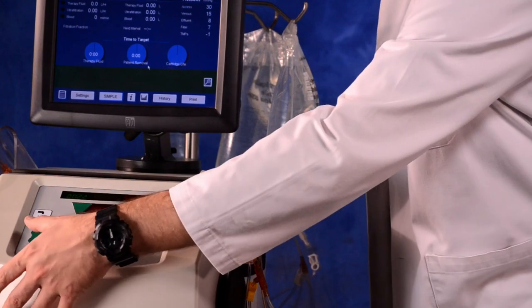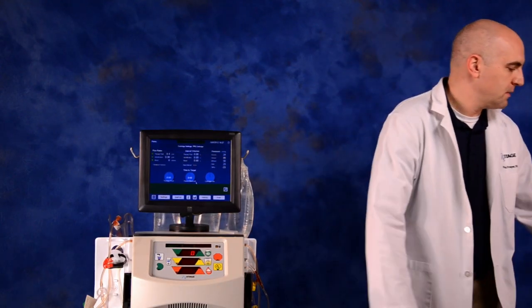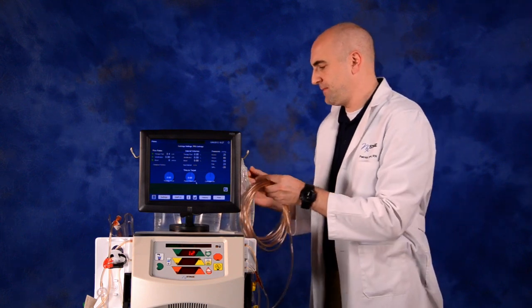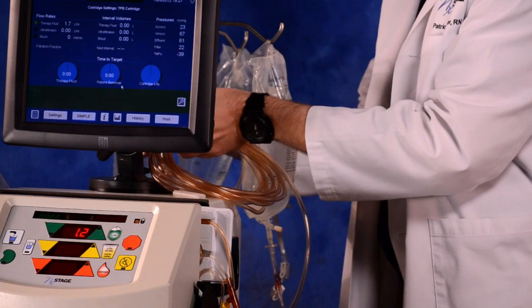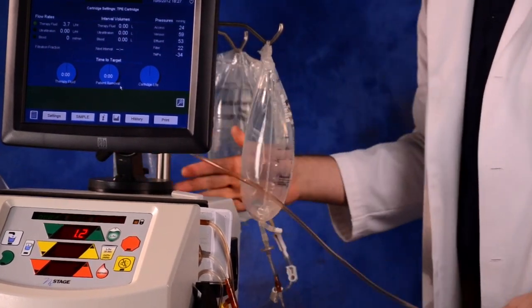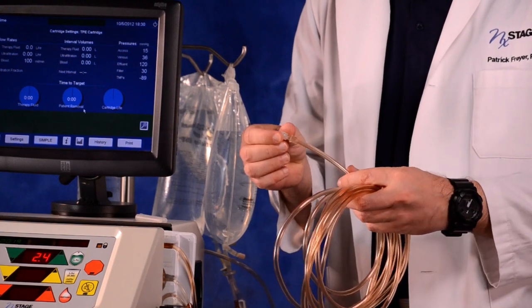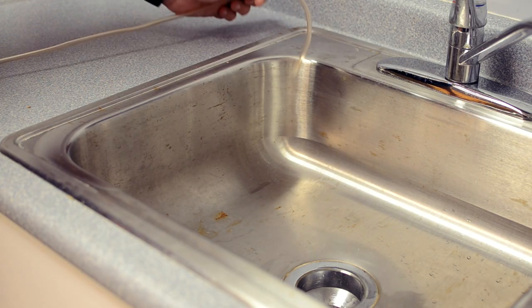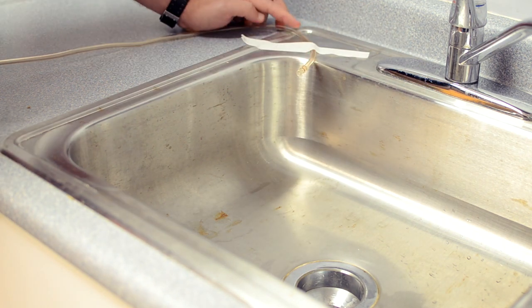Press the add fluid key to begin prime. Set up the waistline extension by securing the end of it with the clamp to the IV pole. Do not connect it to the cartridge. Remove the clear end cap and then position it in the drain, leaving an air gap between the end and the fluid in the drain. Do not submerge the end of the waistline. A drain bag can also be used for collection if desired.